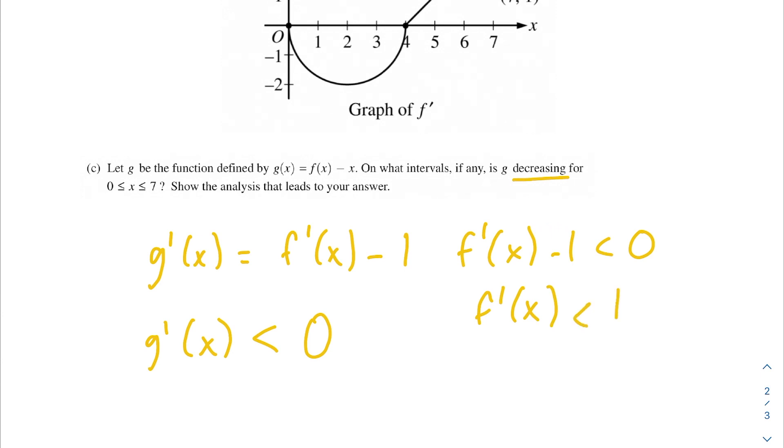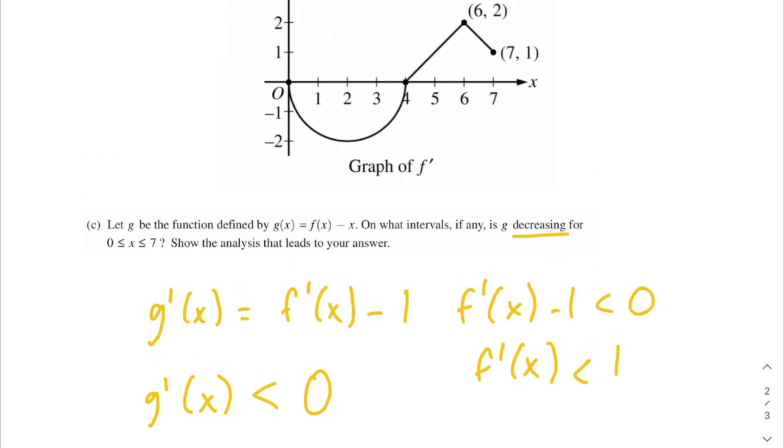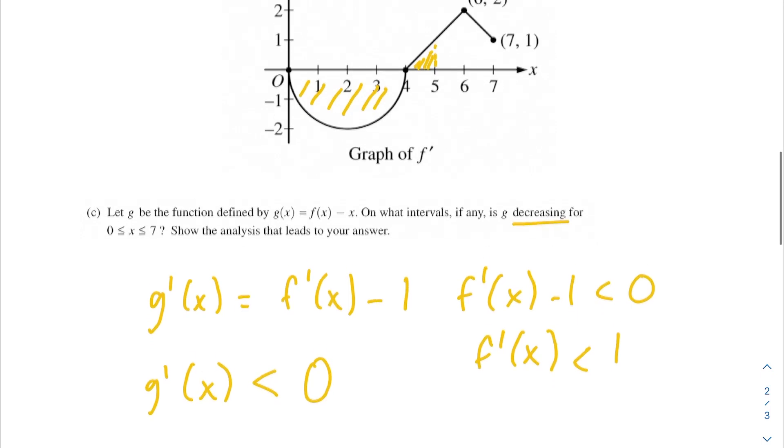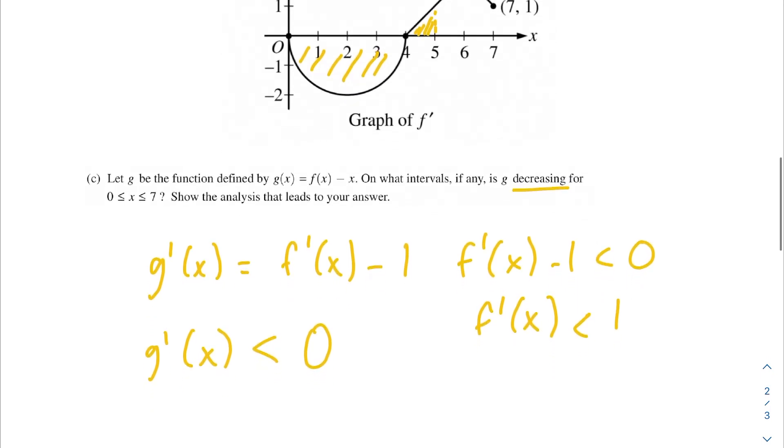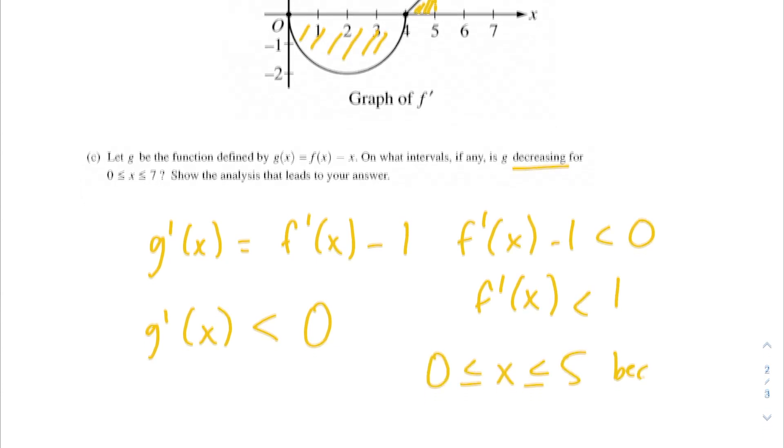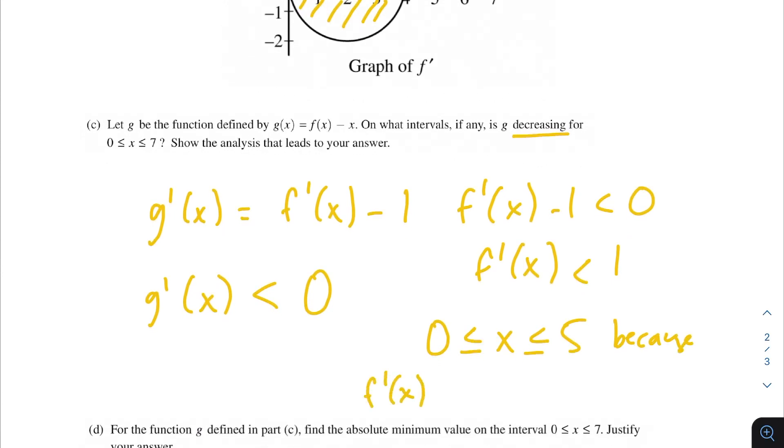So when f'(x) < 1. Where does that happen within our function? It seems like it happens here, and then up until 5. At these points, g will be decreasing because of this expression we've set up. So we would say that it is decreasing between 0 and 5 because f'(x) < 1 for those values.